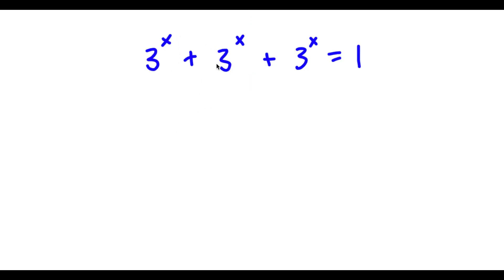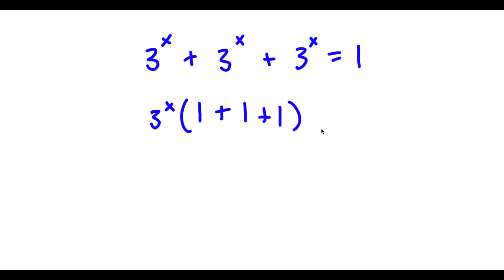Alright, so I have 3 to the power of x plus 3 to the power of x plus 3 to the power of x is equal to 1. I'm going to start by factoring out 3 to the power of x from the left-hand side. So I have 3 to the power of x times (1 plus 1 plus 1) equal to 1, which simplifies to 3 to the power of x times 3 is equal to 1.